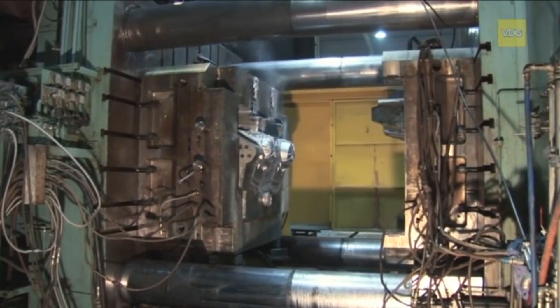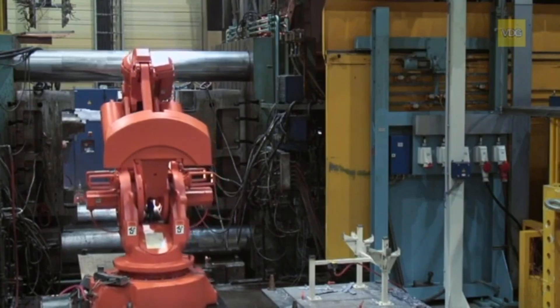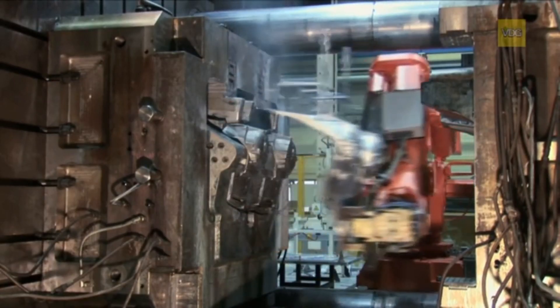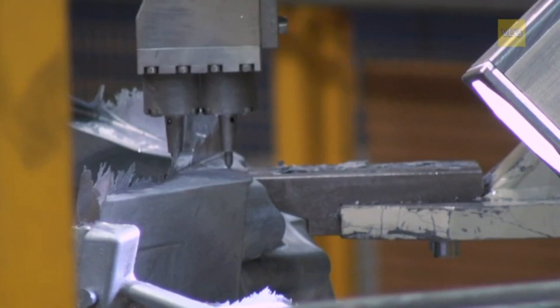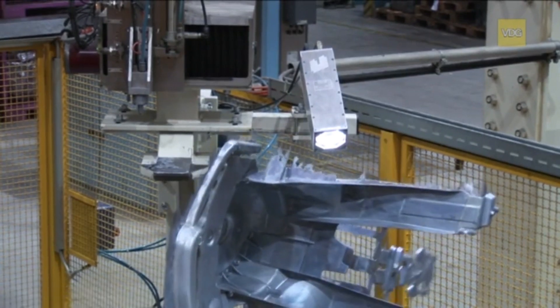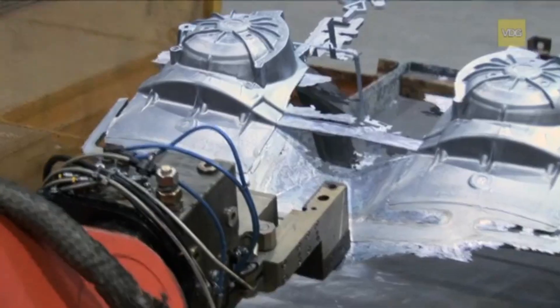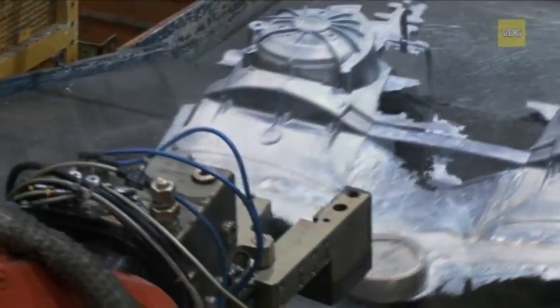After solidification, the machine opens the mold, and a robot removes the casting, which is ejected by the ejector system, and transports it for identification marking. After scanning the engraved part data, the casting is placed for optical inspection.